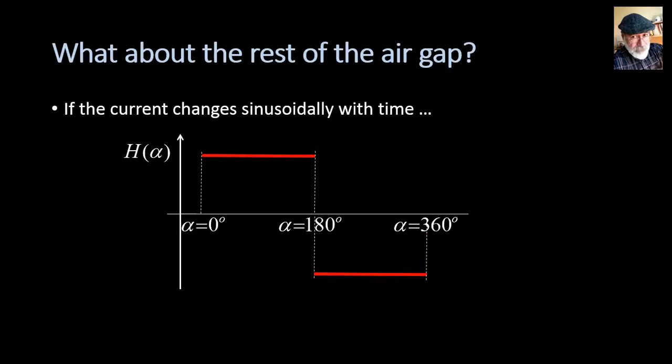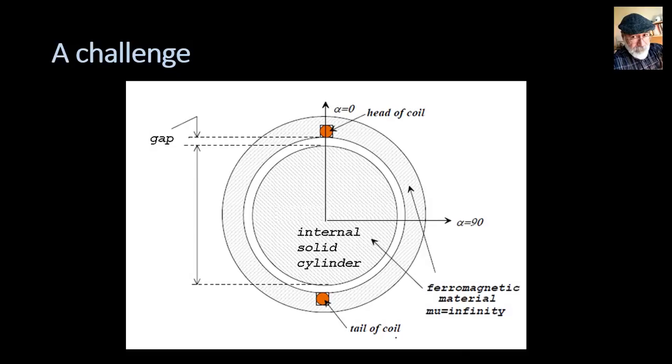Now I have a challenge for you all. What if, instead of having one coil, we had three? Look, the coil we have, we'll label A. And then we insert 120 degrees away another coil that we will call coil B. And then again, another 120 degrees away, we install the third coil, and we call that C.